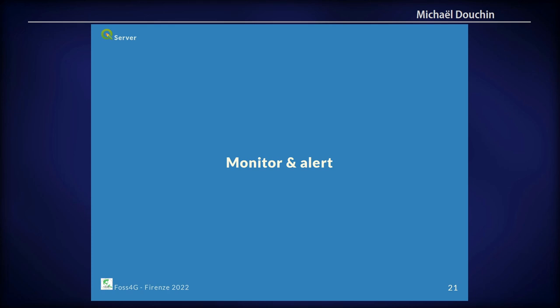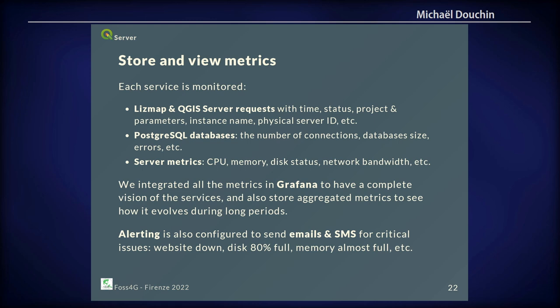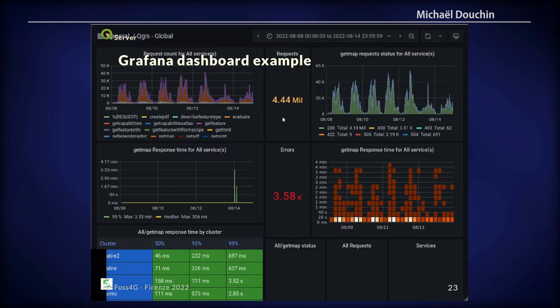For monitoring, we store metrics for all requests made by LizMap WebClient to QGIS Server and to PostgreSQL. We also store metrics for CPU, memory, network usage, and status. All these metrics are integrated in Grafana, a dashboard tool, and we use that to know what's happening. We also have alerting — text alerts by phone, email, or other means — for when there is a problem. Here is a small example of one week of requests showing four million requests, the different request types throughout the days, loading times, and any errors.